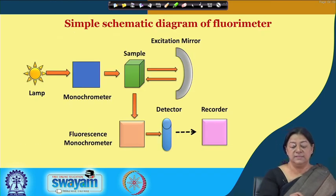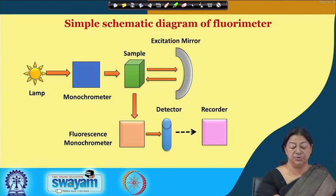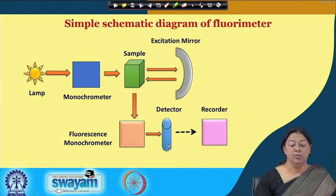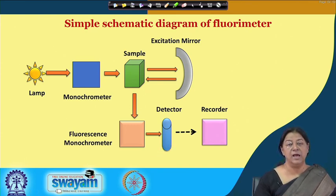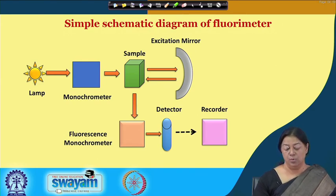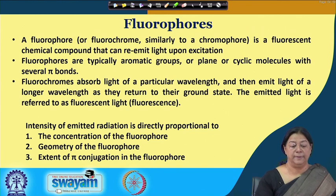A simple schematic diagram shows the components: the lamp, the monochromator, the sample, the excitation mirror, the fluorescence monochromator, the detector, and the recorder. We will be showing you how to record fluorescence spectra and what differences can occur when we look at fluorescence spectroscopy.